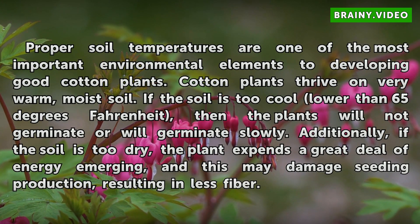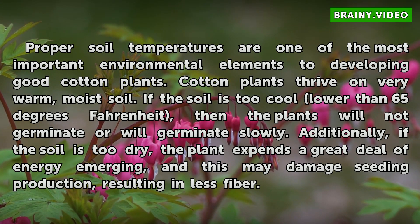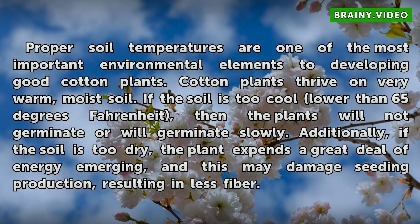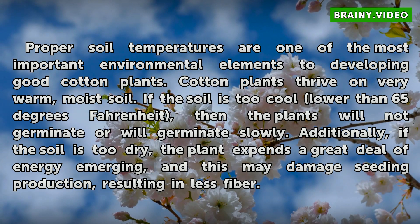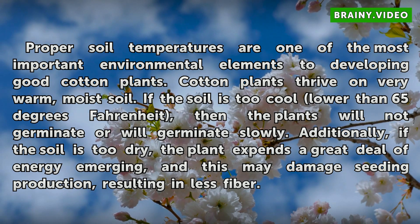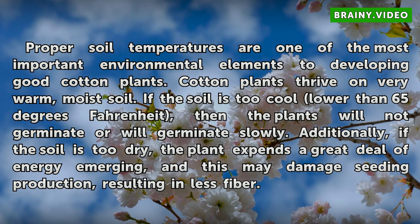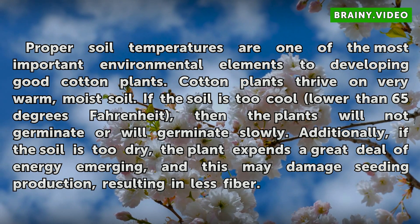Proper soil temperatures are one of the most important environmental elements to developing good cotton plants. Cotton plants thrive on very warm, moist soil. If the soil is too cool — lower than 65 degrees Fahrenheit — then the plants will not germinate or will germinate slowly. Additionally, if the soil is too dry, the plant expends a great deal of energy emerging, and this may damage seeding production, resulting in less fiber.